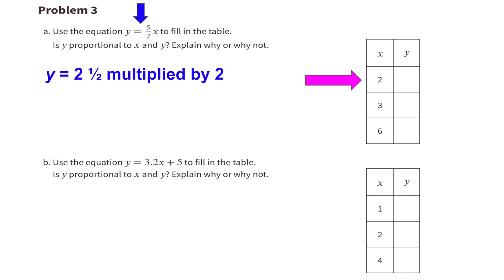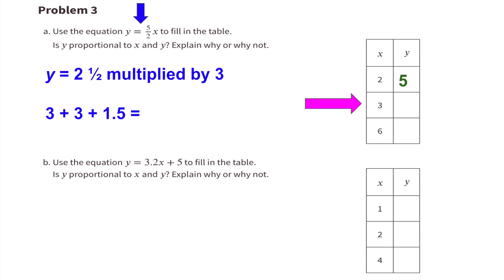When x is 2, y equals 2.5 multiplied by 2, which is the same as 2 plus 2 plus half of 2, or 1, giving y equals 5. When x is 3, y equals 2.5 multiplied by 3, or 3 plus 3 plus half of 3. Since half of 3 is 1.5, adding 3 plus 3 plus 1.5 gives 7.5. So when x equals 3, y equals 7.5.